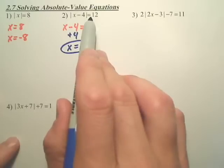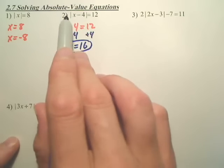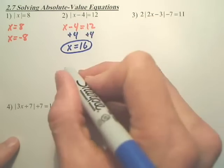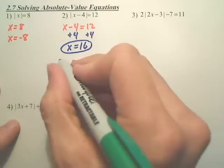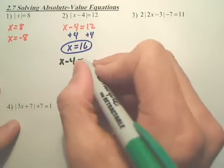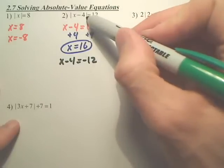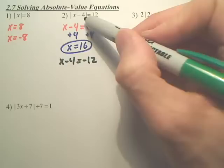But absolute values, don't those make whatever ends up in here positive? So watch this real quick. There's also another answer. You can also do x minus 4 equals negative 12. Because if what's in here ends up being negative 12, will the absolute value switch to a positive 12? Absolute values switch values to positive before they come out.